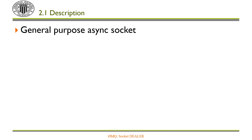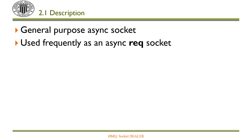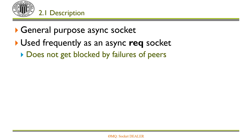Let's explain dealer sockets. It's a general-purpose asynchronous socket, and it's used frequently as an asynchronous REQ socket. That is, it is used in client processes. Using it, they may interact with servers in an asynchronous way. This means that such a client may also send other requests to other servers in the interim, while it's waiting for a reply. So it doesn't get blocked by failures of peers, nor by the interaction with a server.